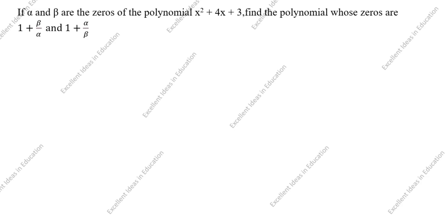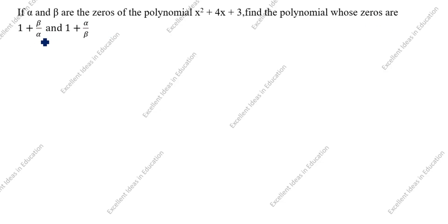Hi friends, welcome to my channel Excellent Ideas in Education. Today we are going to solve this polynomial problem. This is a board exam 2013 problem. If alpha and beta are the zeros of the polynomial x squared plus 4x plus 3, find the polynomial whose zeros are 1 plus beta by alpha and 1 plus alpha by beta.